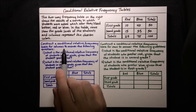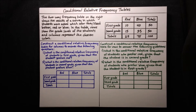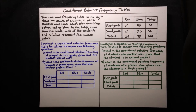Our first task is to construct a conditional relative frequency table for columns to answer the following questions. First, what is the conditional relative frequency of students in first grade, given that the student prefers red? And second, what is the conditional relative frequency of students in second grade, given that the student prefers blue? Before we get into these questions, let's go ahead and construct the table, and talk about what conditional relative frequency means.